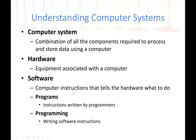We have two types of software: application software and system software. An example of a system software would be the operating system, which manages all the computer hardware resources. A program is instructions written by programmers, and a program becomes what we call software. Programming is the process of developing software or writing software instructions.